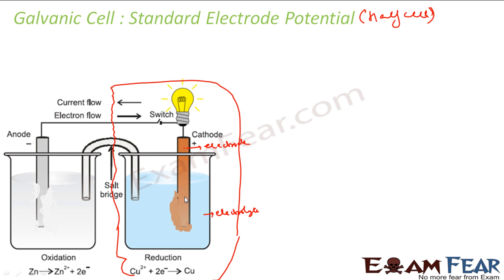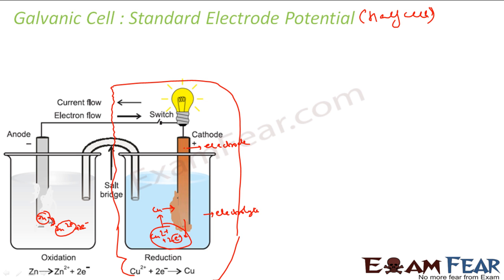At this interface there is a tendency of metal ions from solution to deposit on the metal. There is a tendency of Cu²⁺ ions in the solution to get electrons from the wire, form copper, and get deposited. This is the copper sulfate case. In the reverse scenario — the zinc half cell — there is a tendency of zinc metal to become Zn²⁺ and give up electrons.